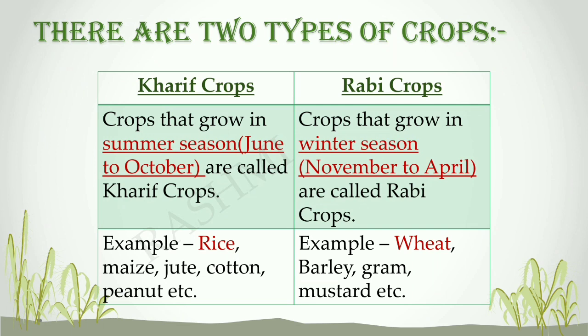Rabi crops are known as winter crops. They are usually sown at the end of the monsoon season, that is, in October or November, and they are harvested before the start of summer season, that is, in spring season in April. Some examples of Rabi crops are wheat, barley, gram, and mustard.